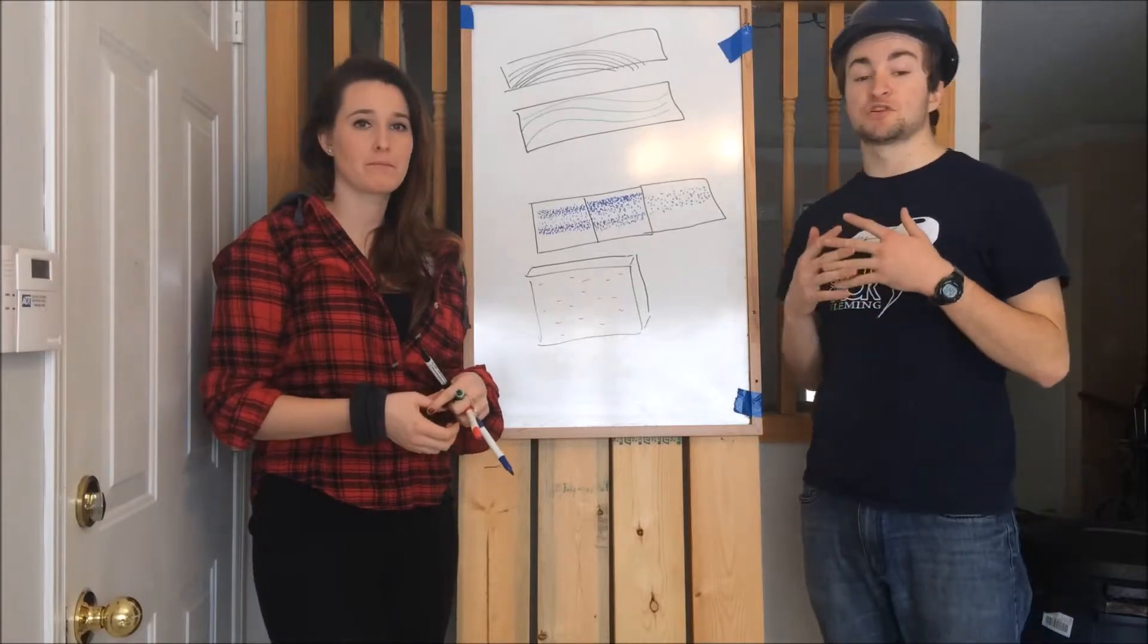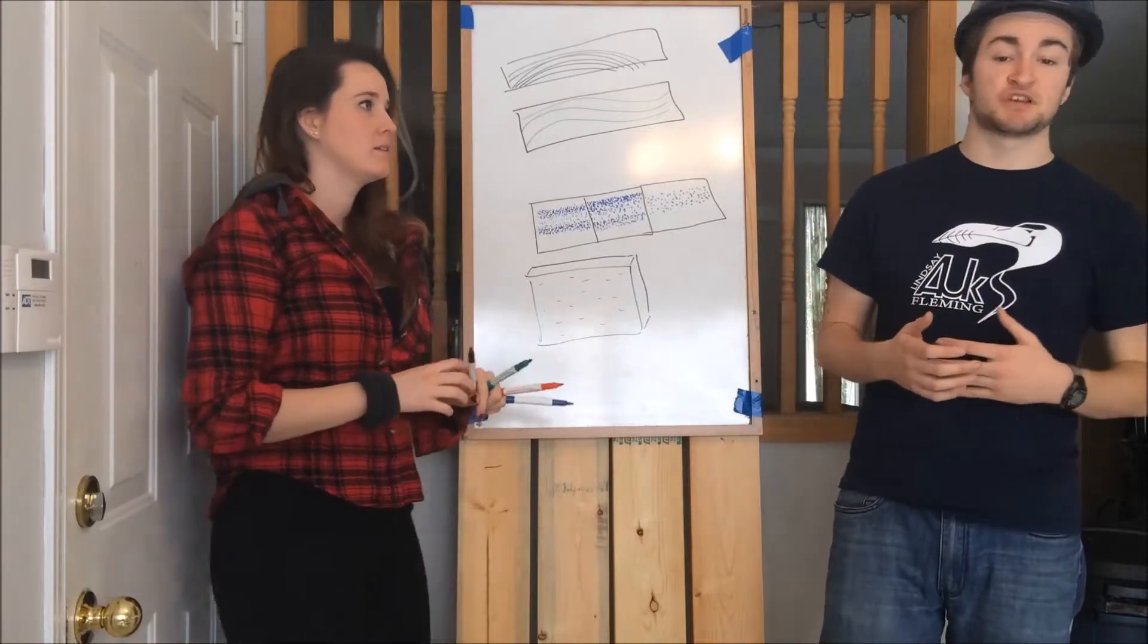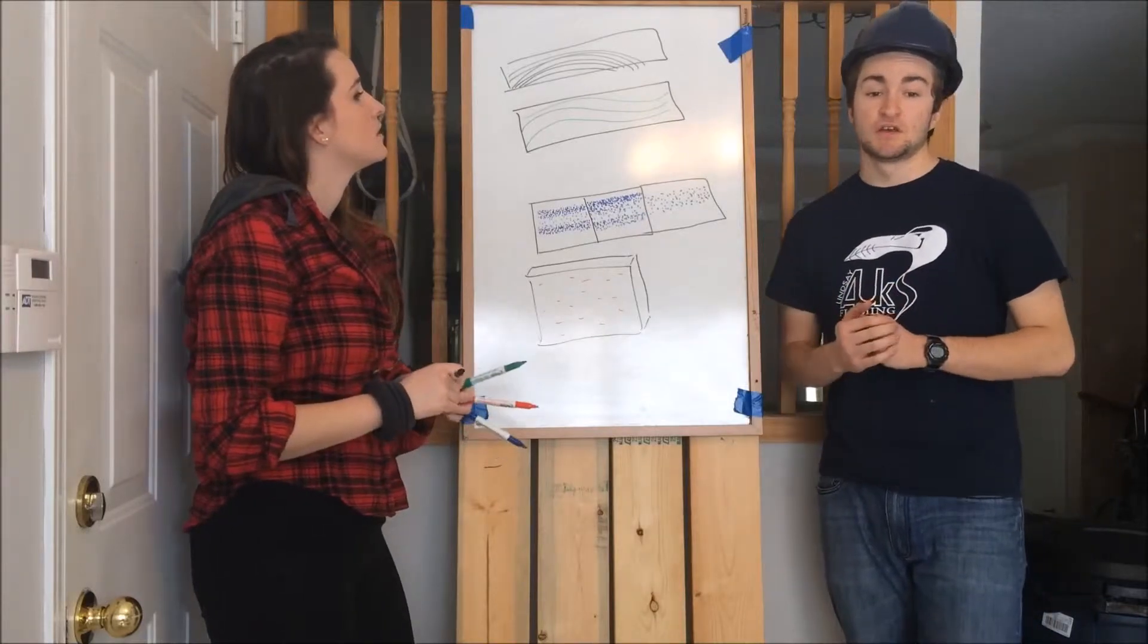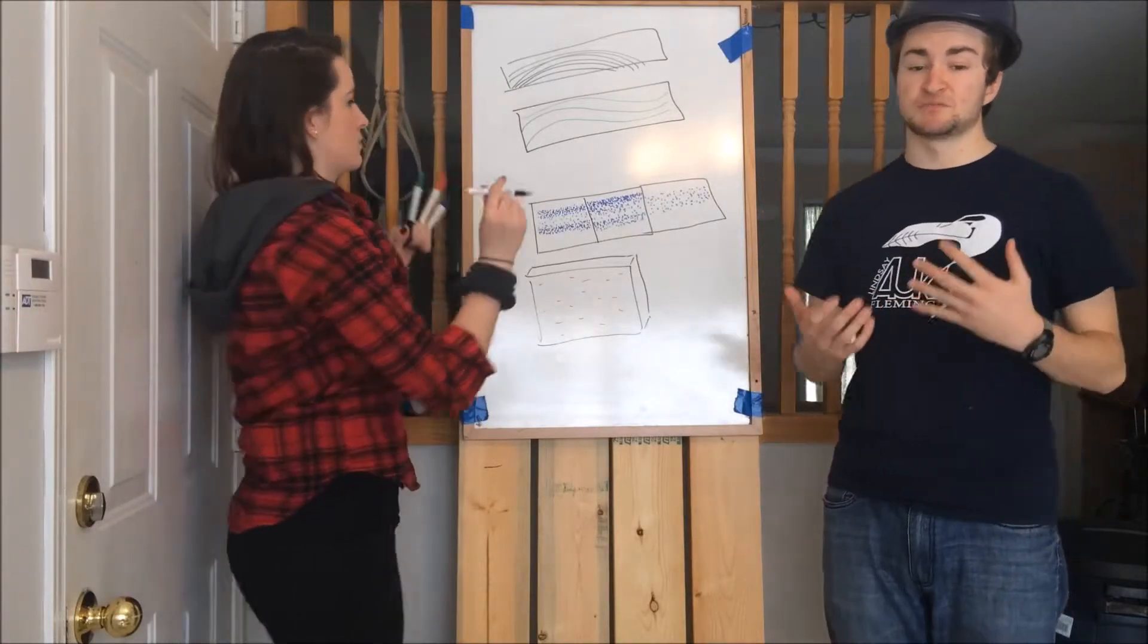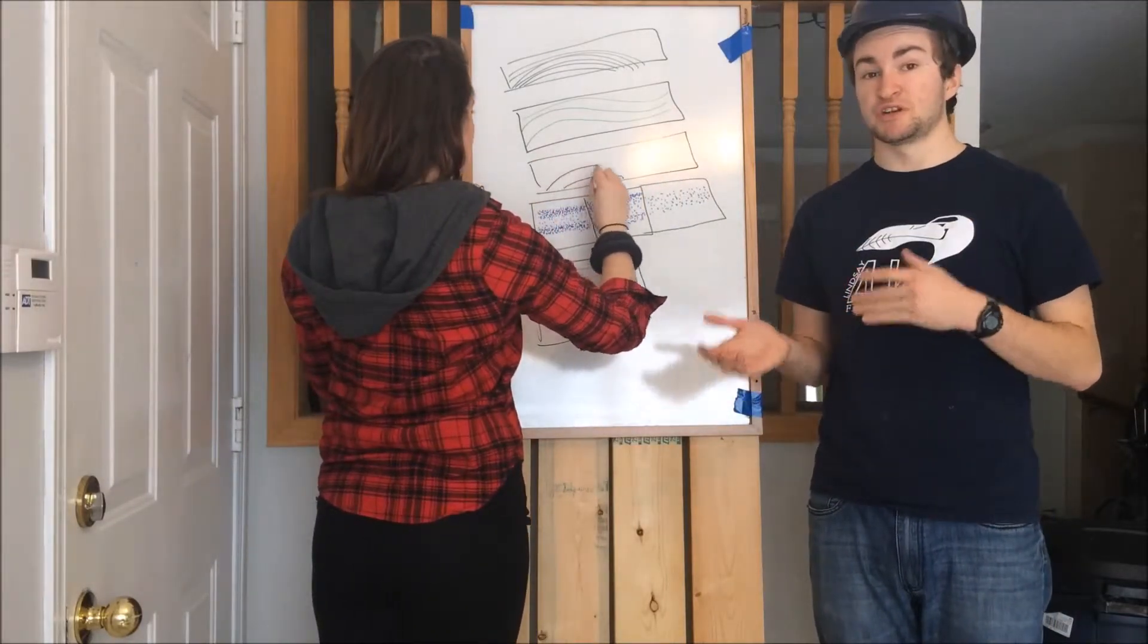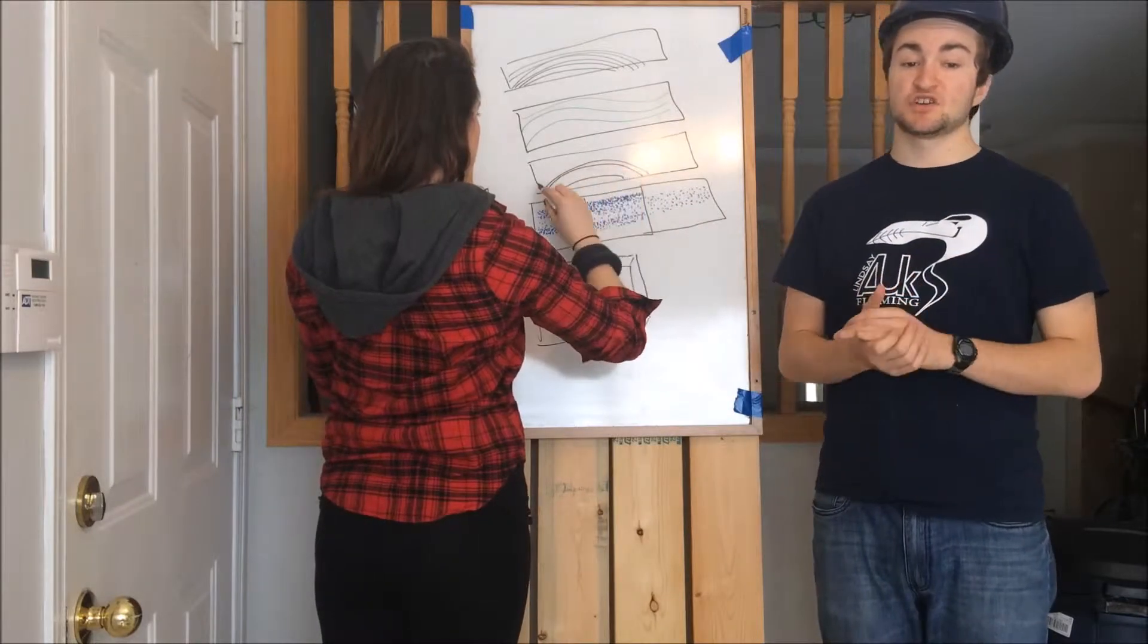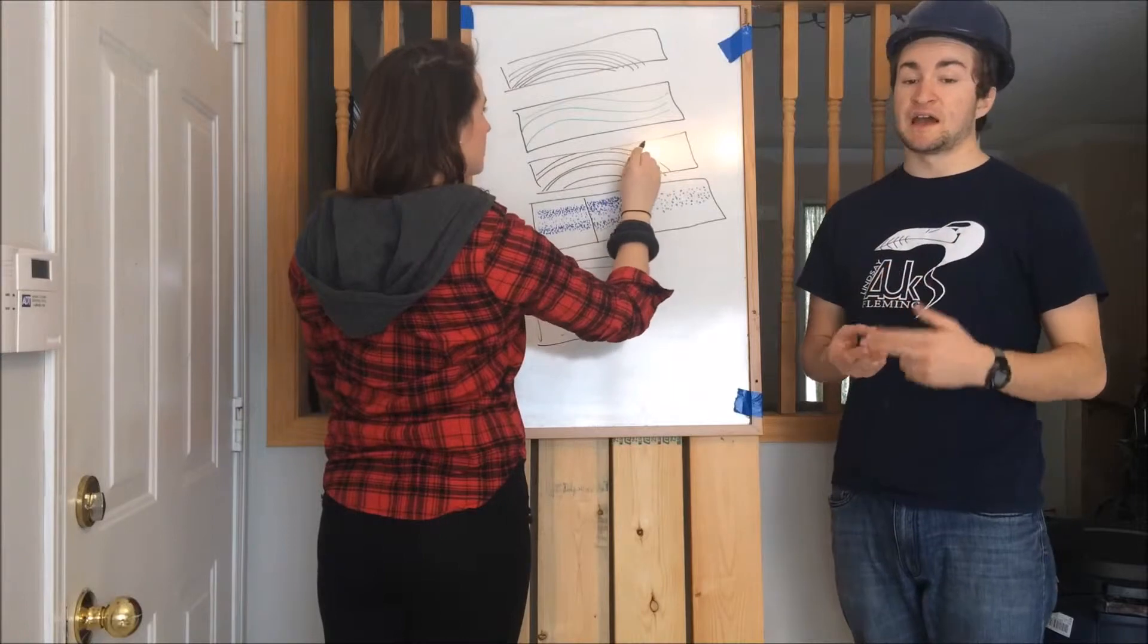So first off we have what's called close grain. Close grain is wood with narrow inconspicuous annular rings. That is opposite of what is coarse grain which is wood with wide conspicuous annular rings in which there's considerable difference between the spring wood and summer wood. This term is used to designate wood with large pores, such as oak, ash, chestnut and walnut which are also known as coarse textured wood.